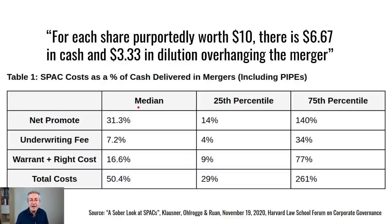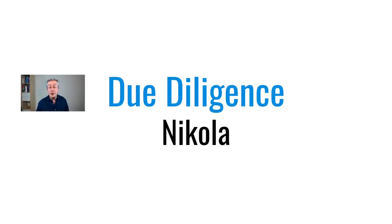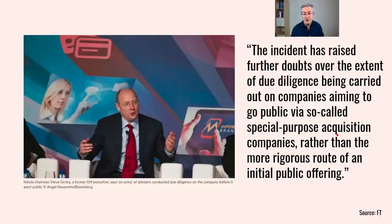In the median SPAC case examined, promote shares effectively represented a fee of 31%, another 7% was paid to underwriters, and warrants cost a further 17% — a combined total cost of 50%. There are also questions about due diligence quality, as illustrated by the Nicola case, where there were real concerns about the rigor of the analysis before the SPAC acquisition, with suggestions that the normal IPO route provides more thorough examination of a company's books.